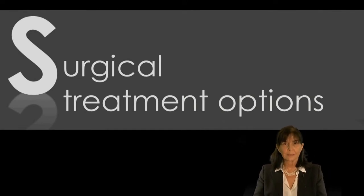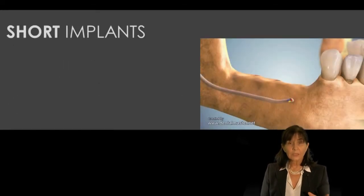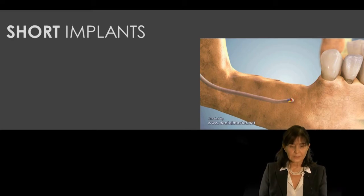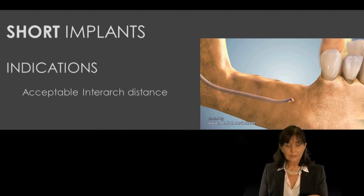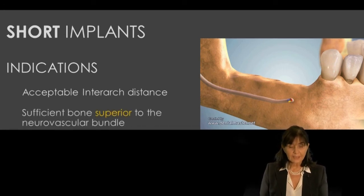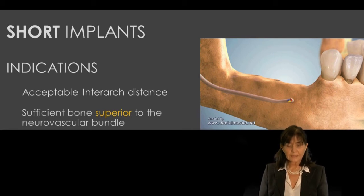For posterior severe atrophy of the mandibular area, one very easy and convenient surgical method is short implants. The indication for short implants in the posterior arch is when we have acceptable inter-arch distance and sufficient bone superior to the neurovascular bundle, as demonstrated here.